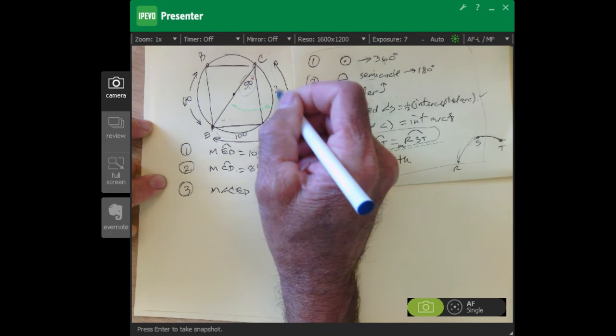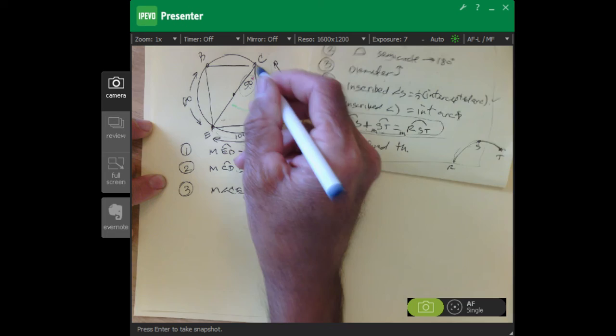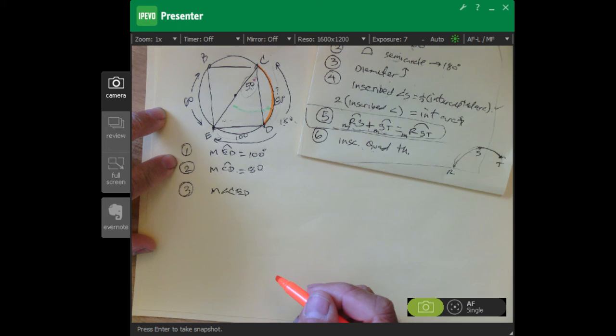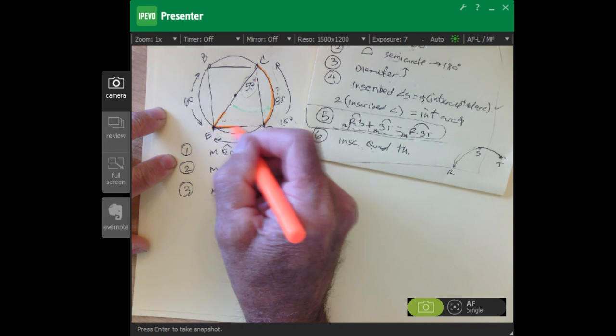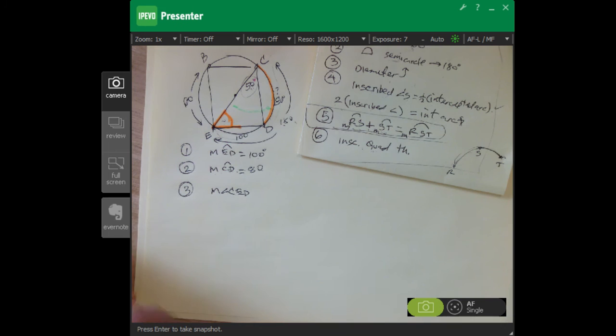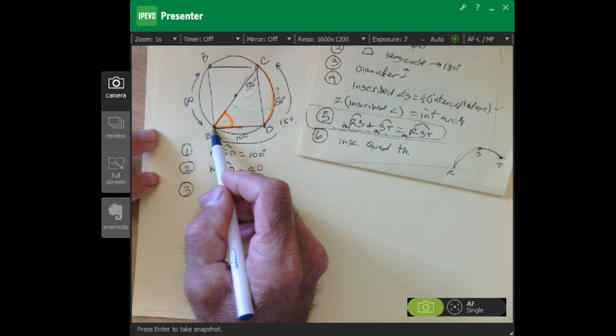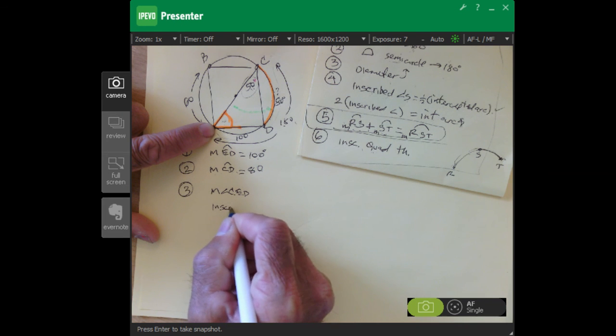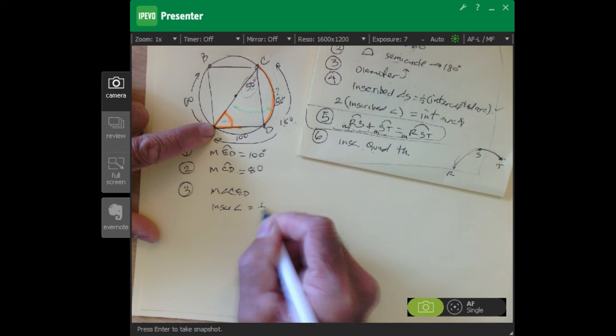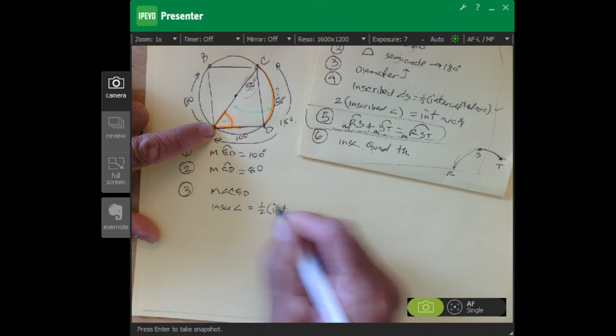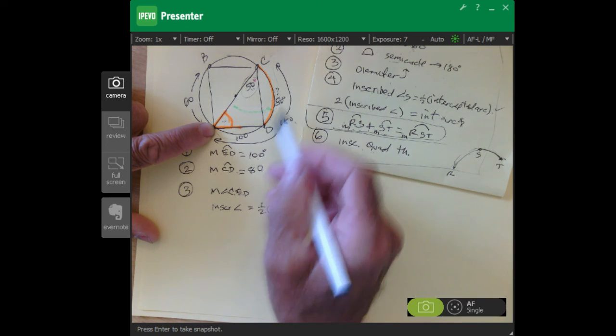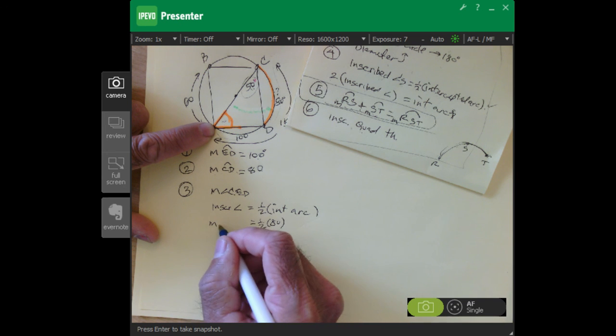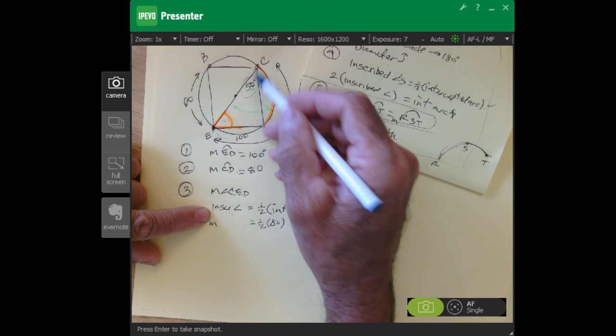We got 80 degrees for that arc measure. The angle that is associated with is this one right here - that's an inscribed angle. The relationship to find that out: inscribed angle equals one-half times intercepted arc. Which one do we know? We know the intercepted arc. One-half times 80 equals the measure of our inscribed angle, which is CED.